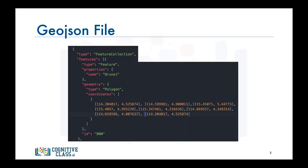Here is an example of what the GeoJSON file would include about each country. The example here pertains to the country Brunei. As you can see, the file includes the country's name, its ID, geometry shape, and the coordinates that define the country's borders and boundaries.